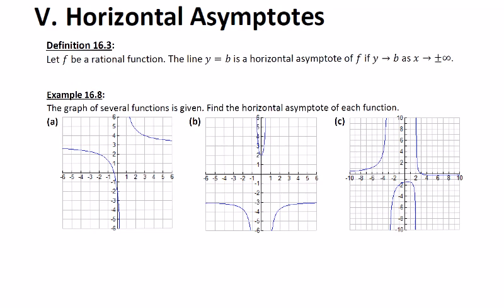It says here, let f be a rational function, then the line y equals b is a horizontal asymptote of your function if the following conditions are satisfied: y has to approach b as x approaches infinity or as x approaches negative infinity.